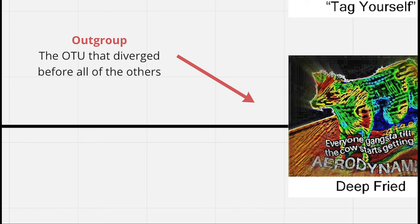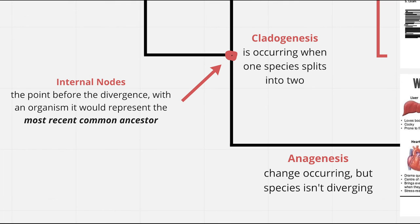We can see in this tree that the deep fried meme split off before all the other groups. In any place where the lines are continuing and not diverging, anogenesis is occurring. The species may be accumulating changes, however, it is not splitting into two species.